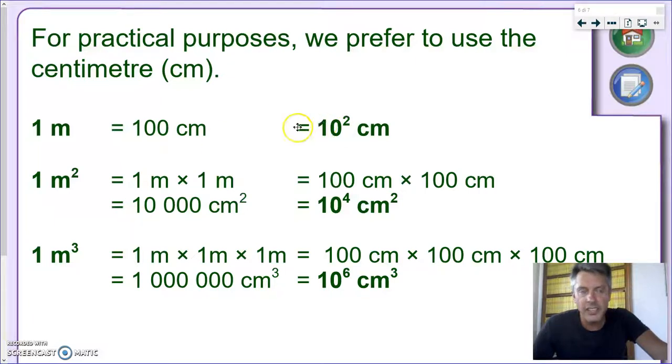So as you can see, we already went up by a factor of 100. Now, there's 100 centimeters in one meter. There's 10,000 or 10 to the power of 4 square centimeters in a square meter.